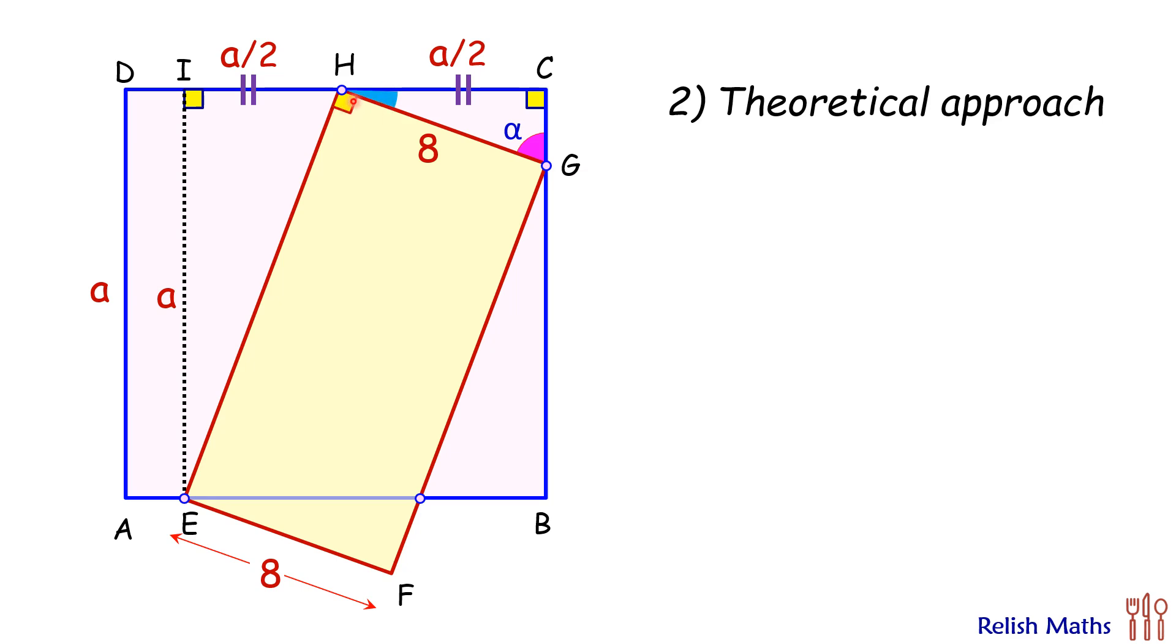This angle is 90 degrees, and hence this angle here will be the same, alpha degrees. Now if we look at the triangles, triangle EIH and triangle HCG, these two triangles are similar by angle-angle similarity.